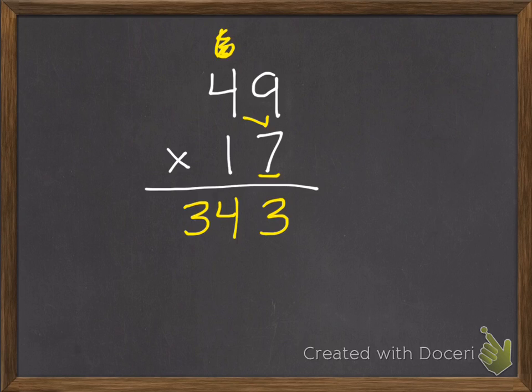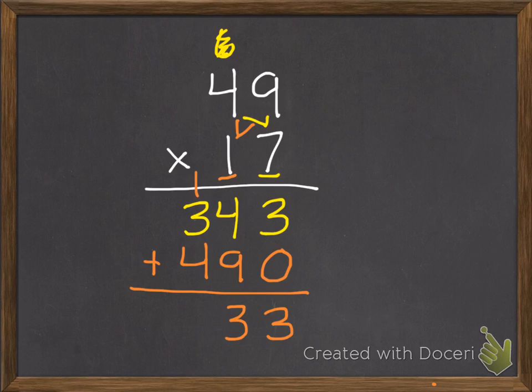So we start with our ones: 9 times 7 is 63. Then 7 times 4 is 28 plus 6 is 34. Now we move on to our tens, and I'm going to cross that number up above so I remember that I've already added that in. We always want to remember to put a 0 here because that one's really a 10. Then 1 times 9 is 9. 1 times 4 is 4. Add these together, we get 3, 13, and 8, so 833.